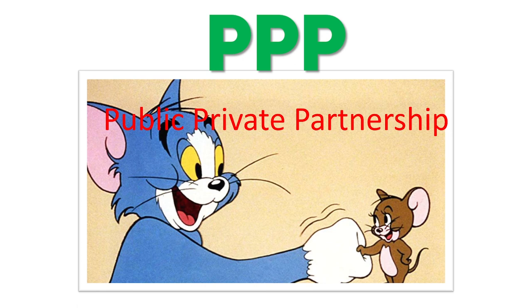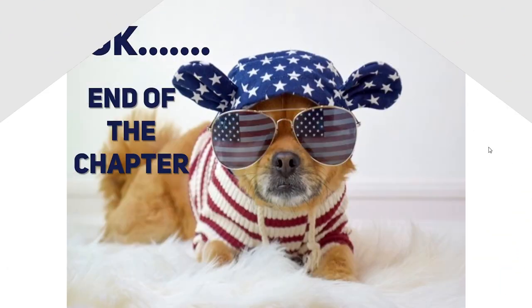Moving on to the next topic: public-private partnership (PPP). When a public organization and a private organization involve themselves in collaboration, that is called a public-private partnership. For example, government agencies or government companies joining together with private sector companies in order to use finances or to improve transportation networks. These kinds of public-private partnerships came into force in recent years. These are the important things in Chapter 3, and this chapter ends here.